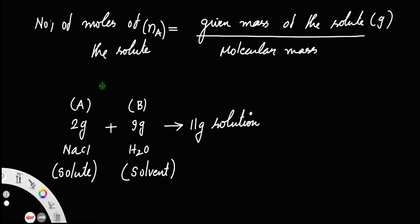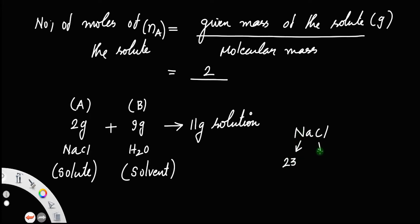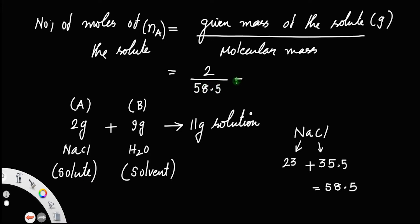Similarly, you can find how many moles of sodium chloride are there in the solution. There are 2 grams of sodium chloride, so given mass of the solute is 2, and the molecular mass of sodium chloride — there are only 2 components, a unit of sodium and a unit of chlorine. The molecular mass of sodium is 23 and that of chlorine is 35.5. Adding 23 plus 35.5 you get 58.5, which is the molecular mass of sodium chloride. Doing this, you will get the answer as 0.034 moles of sodium chloride.